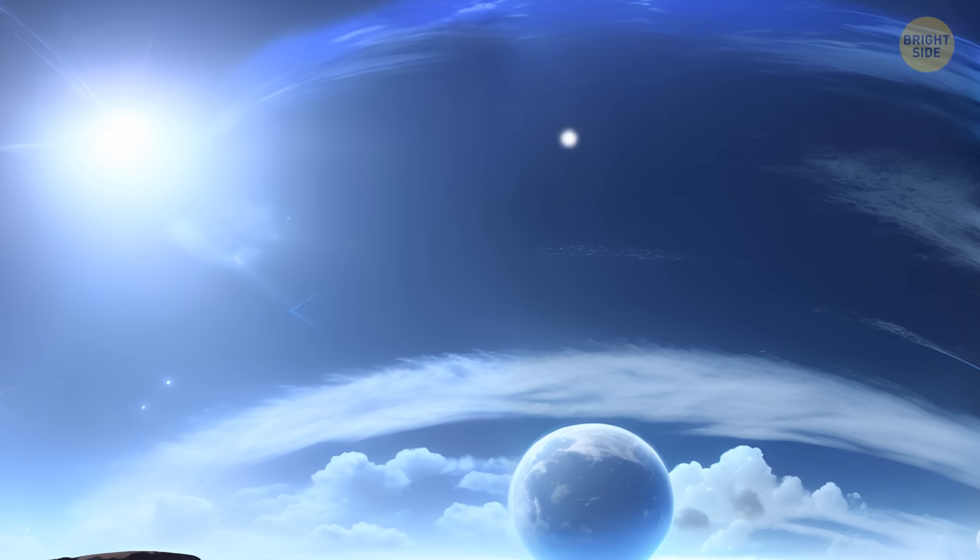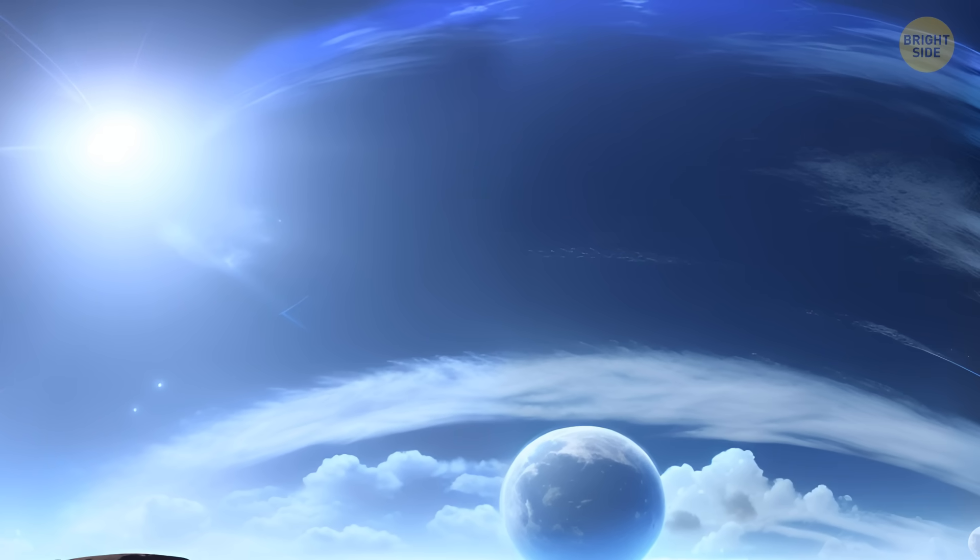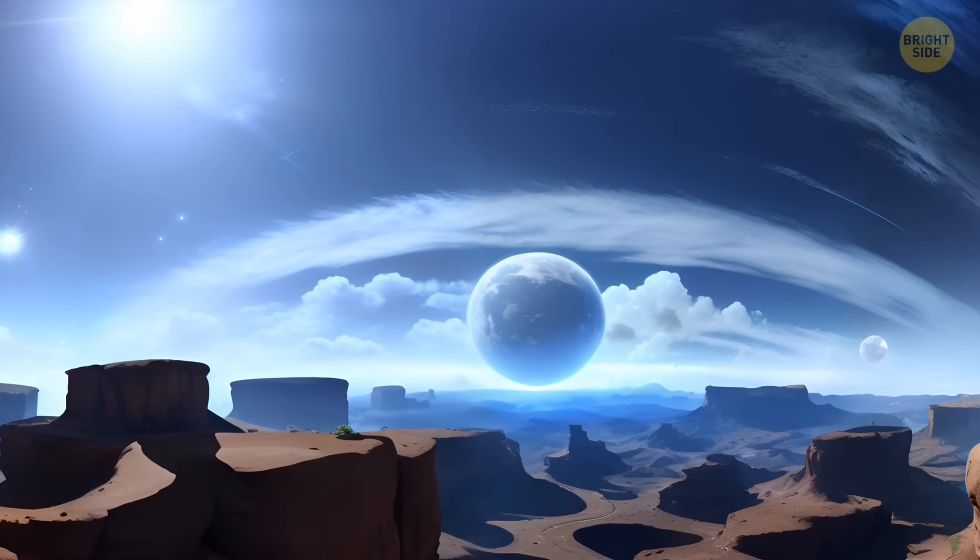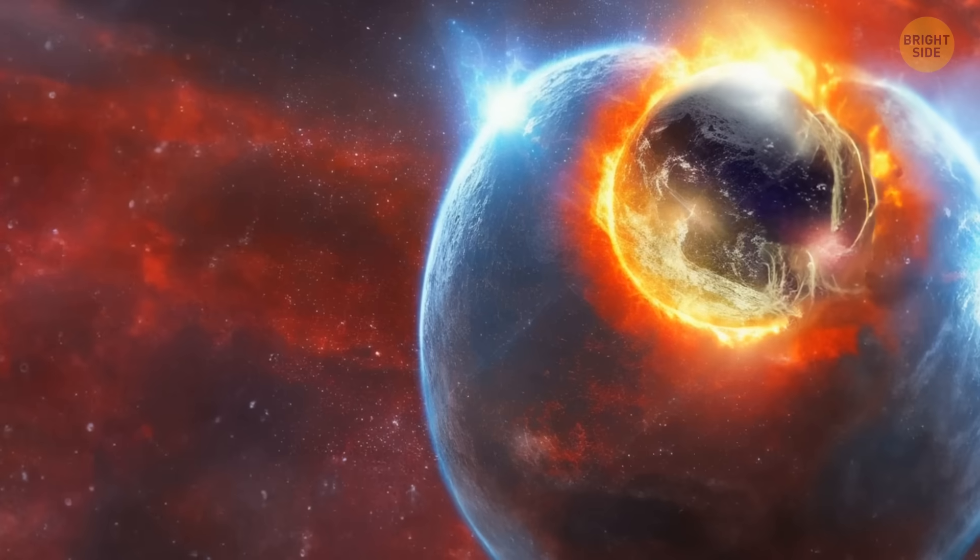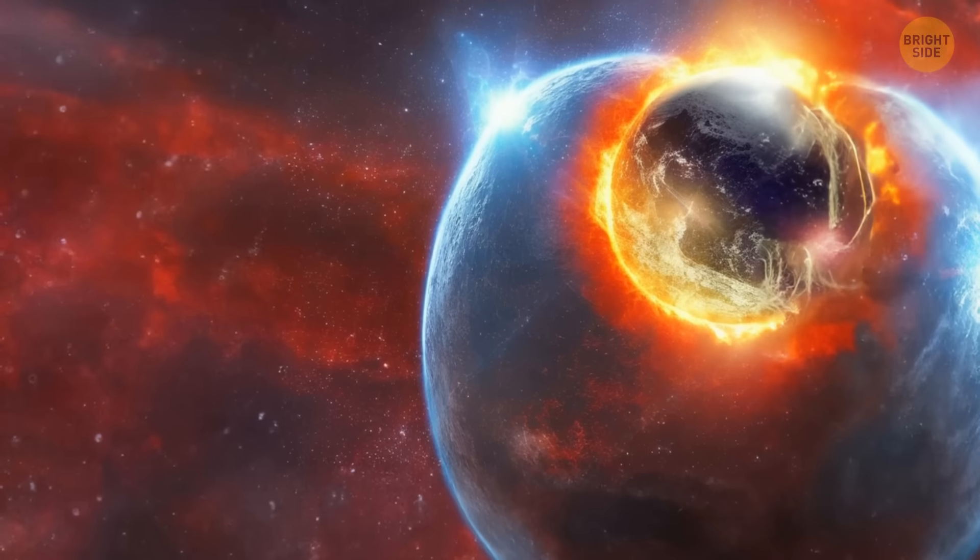The sun would suddenly become much, much brighter, and it would eject some material into space. It would swallow several planets, including Earth, before nonchalantly setting back to what it was.